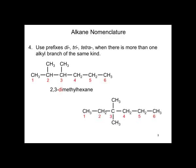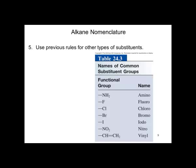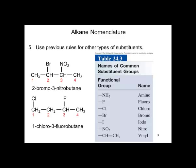Use the previous rules for other types of substituents. Here is a table of common substituent groups. This compound is 2-bromo-3-nitrobutane. This compound is 1-chloro-3-fluorobutane.